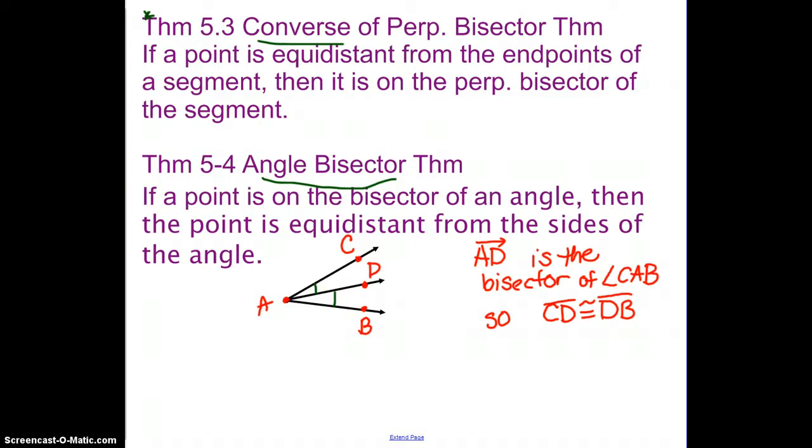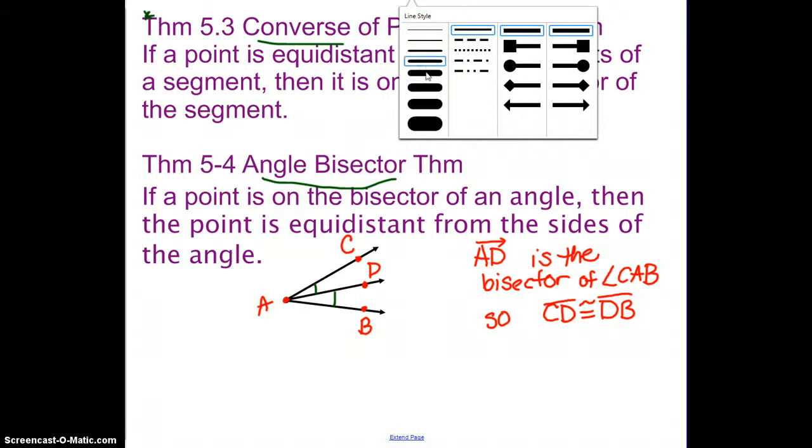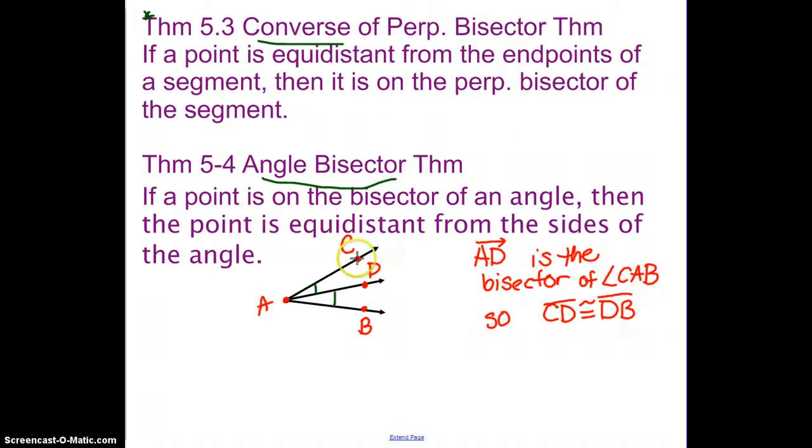So this line that goes from C to D, from D to B, those are also going to be equal. So that's where we're going to spend the majority of our focus time in this section, dealing with bisected angles and bisected segments.